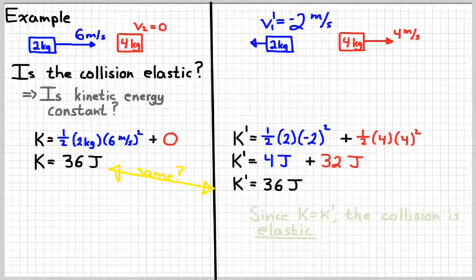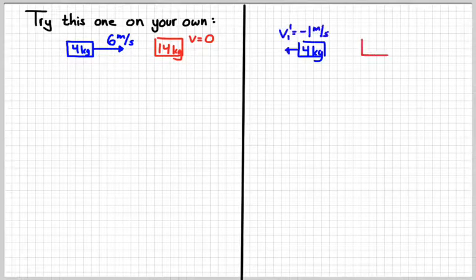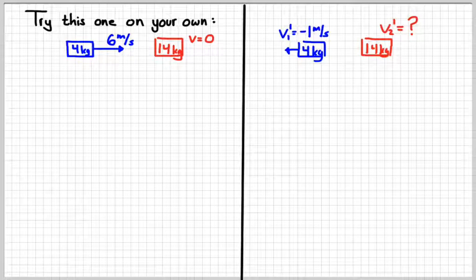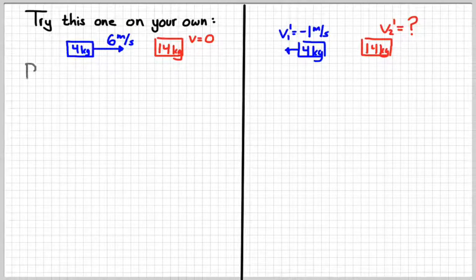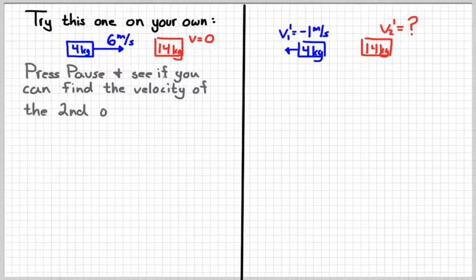So that's our test to determine whether a collision where the objects separate is elastic: calculate the energy before and after, and compare. Now see if you can do this one on your own. Two objects: the first mass is four kilograms moving to the right at six meters per second, and the second mass is 14 kilograms, initially at rest. They hit each other, and afterwards the four kilogram object moves backwards at one meter per second. Your job is to find the velocity of the second object. Press pause and give it a try.